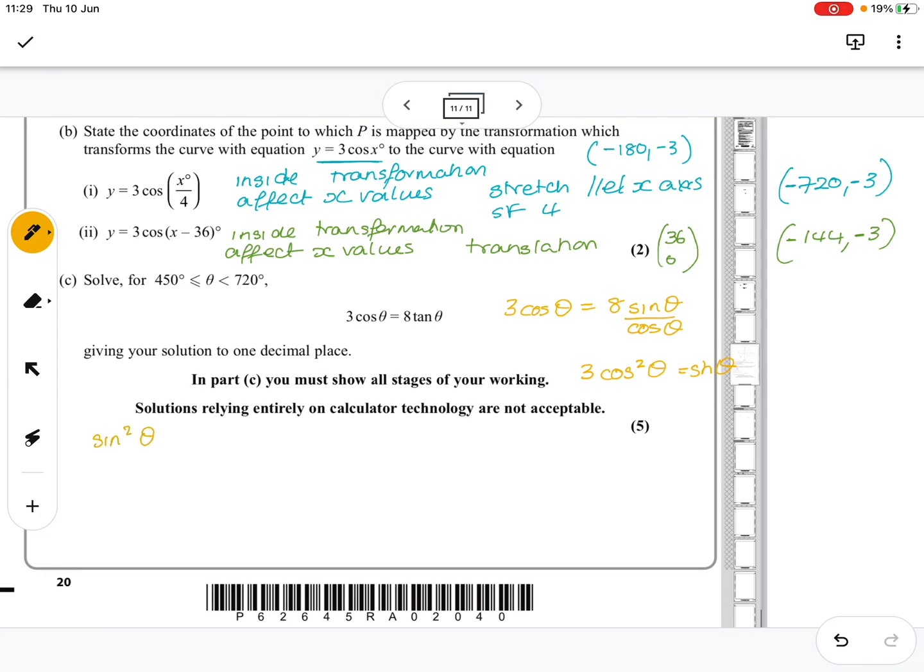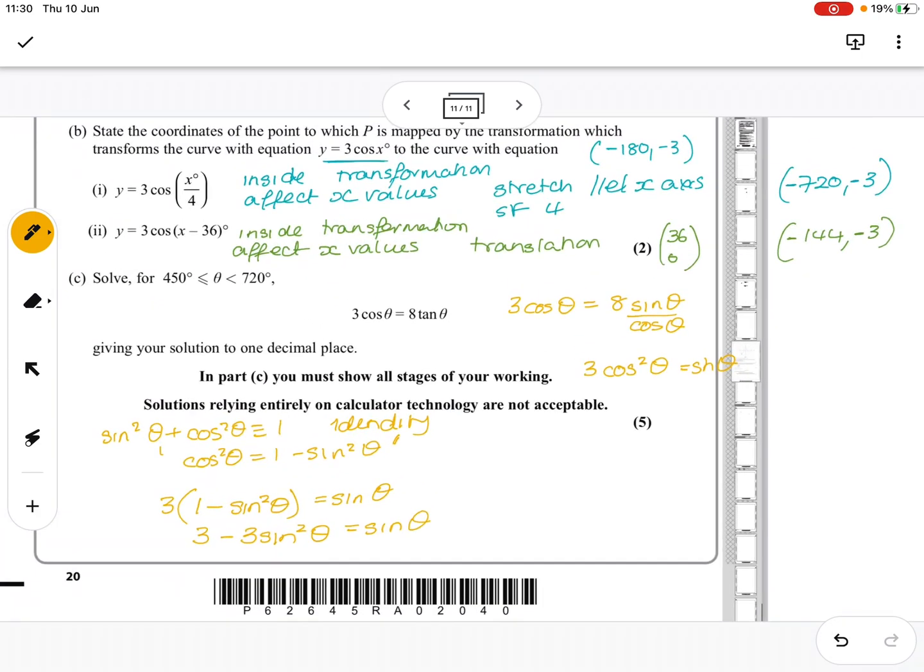Using our sin squared theta plus cos squared theta is equivalent to 1 identity. I'm going to rearrange it to say cos squared theta equals 1 minus sin squared theta. That's the rule I'm using. So I'm going to do 3 lots of 1 minus sin squared theta equals sin theta. I'm going to multiply out the bracket. And then I'm going to shove it all on the other side so that 0 equals 3 sin squared theta plus sin theta minus 3.